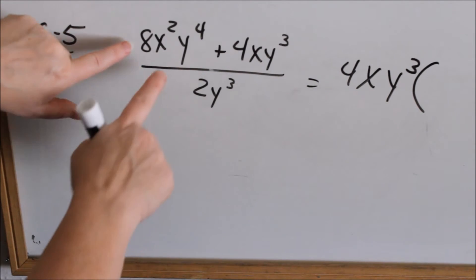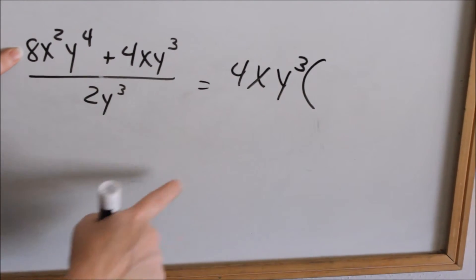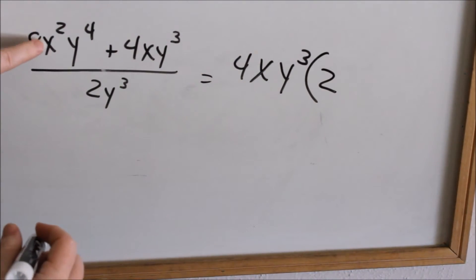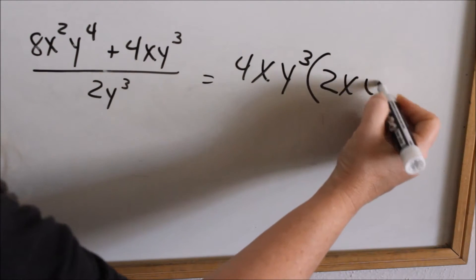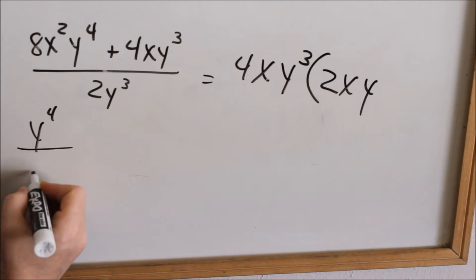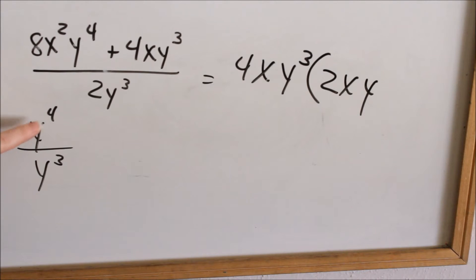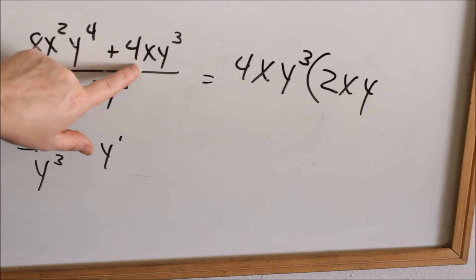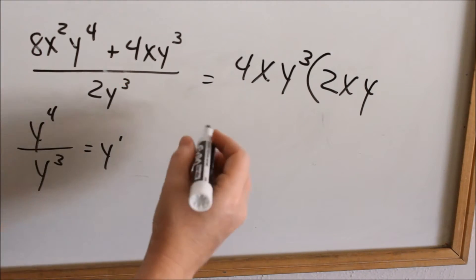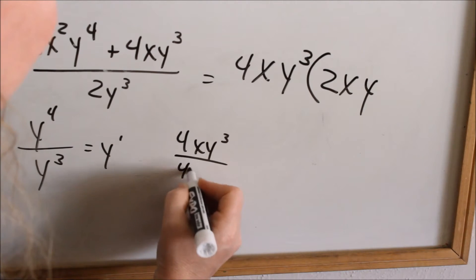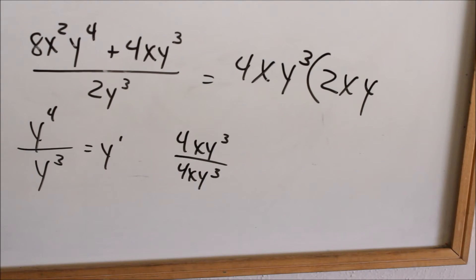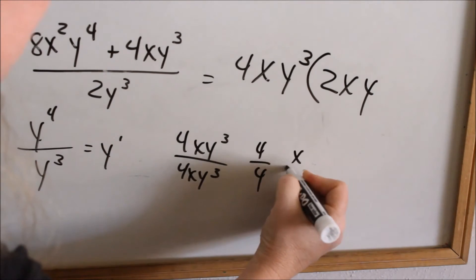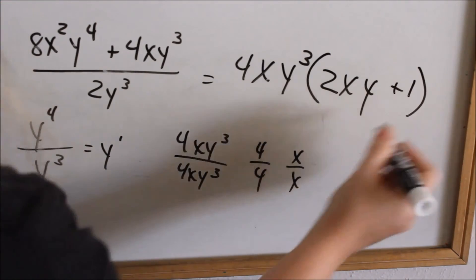Now I want to write what I have left in parentheses. Basically, I'm taking this term and dividing it by 4xy cubed. So 8 divided by 4, I'll have 2 left. x squared divided by x, I should have 1x left. A y to the 4th divided by y cubed, I should have 1y left. Let me show you how that works. If I have y to the 4th divided by y cubed, when your bases are the same and you're dividing, you subtract your exponents. So that would be a y to the 1st left. In this term, I'm dividing this term by 4xy cubed. 4xy cubed divided by 4xy cubed. Anything divided by itself is 1, not 0. Don't tell me 0. There is a 1 left over.